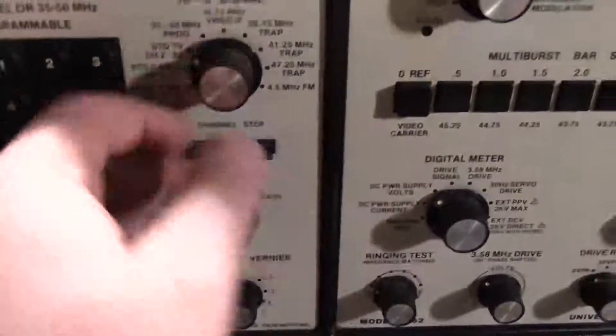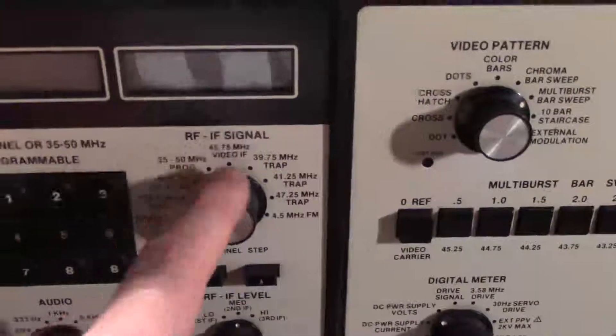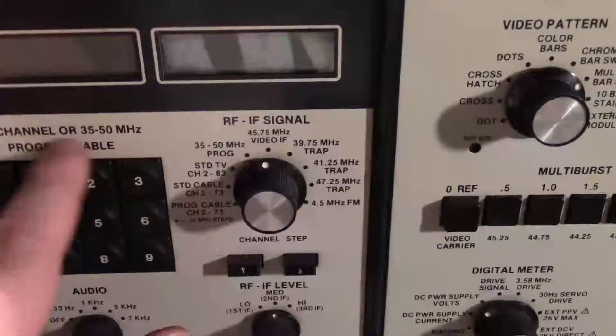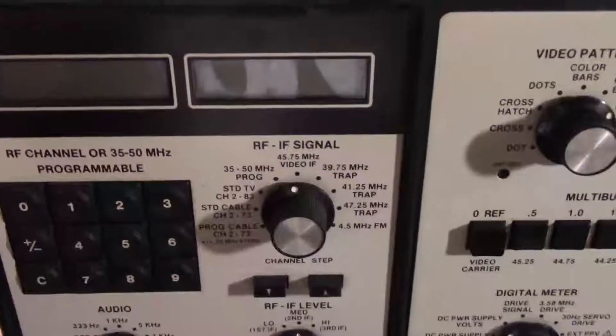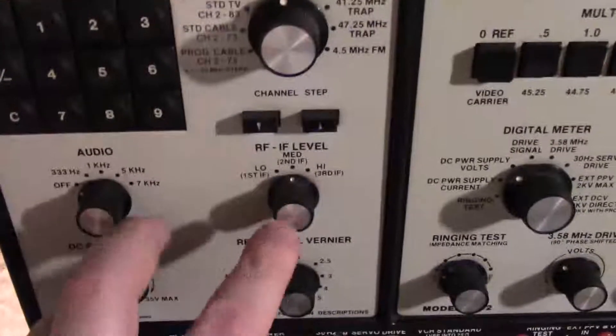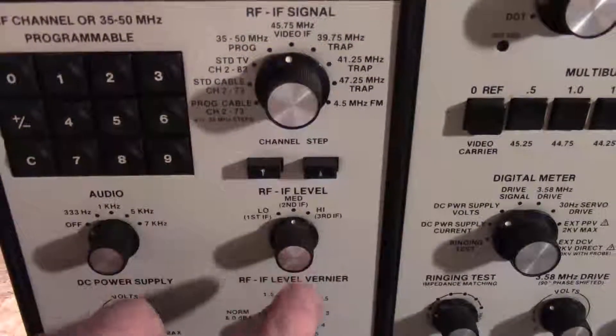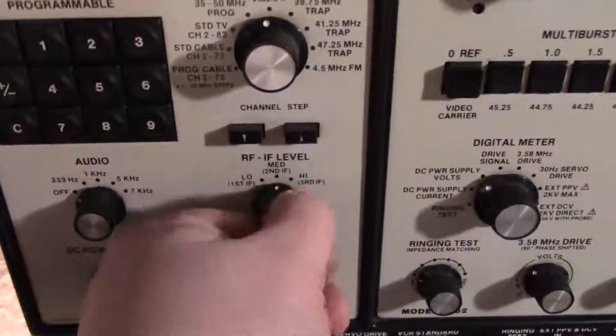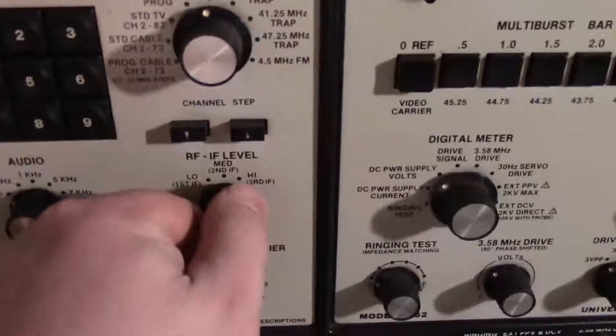It also does IF, so you can do IF alignments. It's programmable right now 35 to 50 MHz. You have variable RF output levels for different areas of the IF: 1st IF, 2nd IF, 3rd IF.